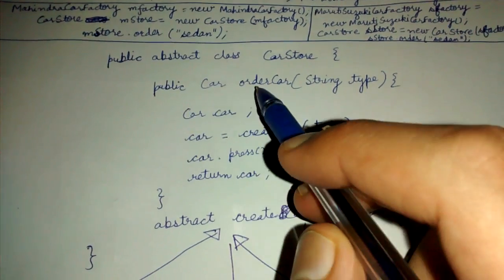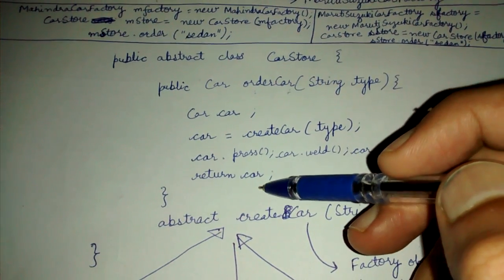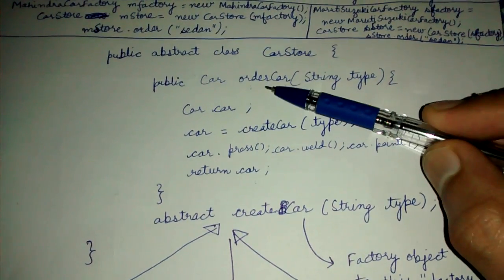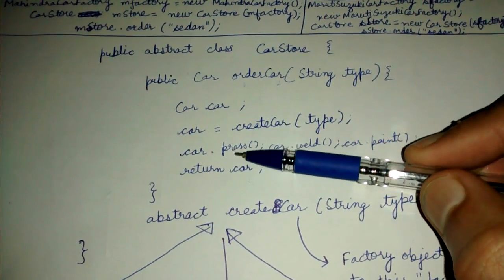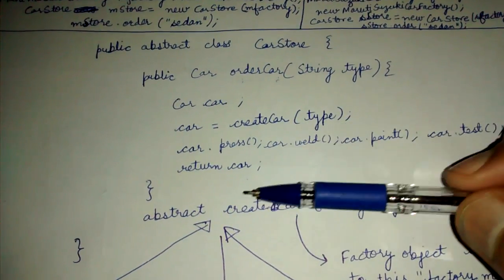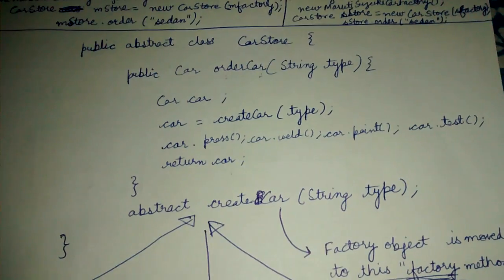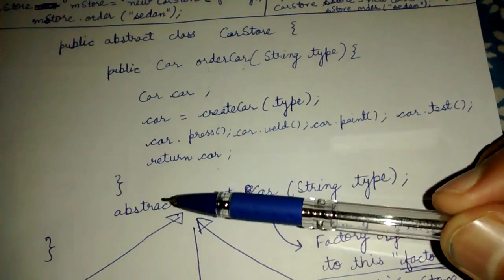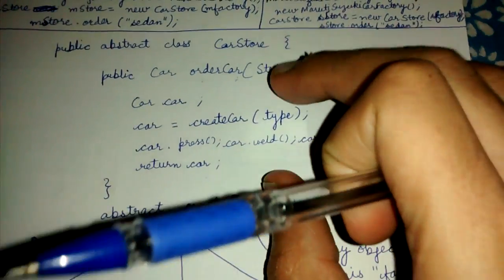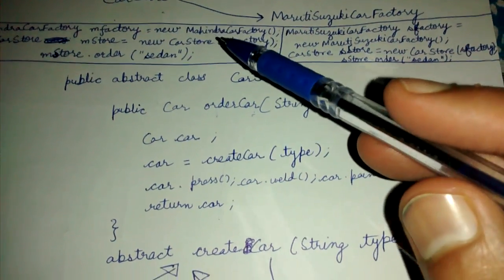So what we do is define an abstract class car store. In that class we define an order car method and I provide a definition for it. This car store class is my class — I say you have a car reference, then you call my create car method, and then I will call press, weld, paint, and test methods on it in the same sequence. Finally, I return the car. I have decided upon and finalized the implementation in the order car method.